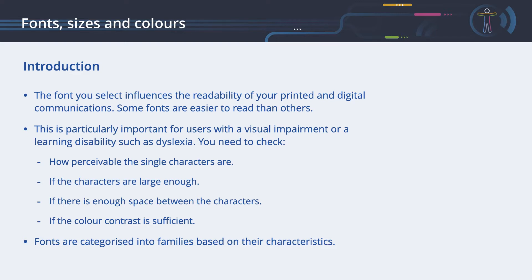If the characters are large enough — letters displayed too small cannot be read easily. If there is enough space between the characters — letters written too close to each other are difficult to recognize. If the color contrast is sufficient — this is also important for people with color vision deficiencies such as colorblindness. So let's learn more about fonts from the point of view of accessibility.